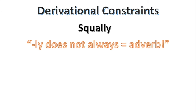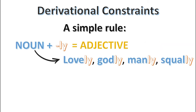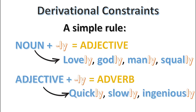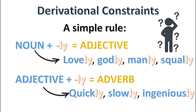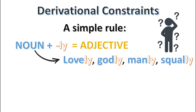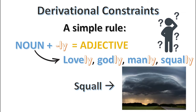The trick is that not all words ending with the -ly suffix in English are adverbs. Most are, but in some cases they're adjectives. The rule is simple: a noun plus -ly results in an adjective, as in 'lovely,' 'godly,' 'manly,' or 'squally.' An adjective plus -ly results in an adverb, as in 'quickly,' 'slowly,' or 'ingeniously.' These distinctions can be very tricky for language learners who lack the necessary vocabulary. If you didn't know the syntactic category of the root 'squall' — meaning a violent storm — you wouldn't be able to differentiate between the two functions of the suffix -ly, and you may have had difficulty telling whether it's an adjective or an adverb.